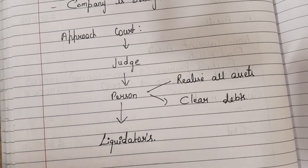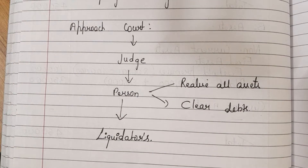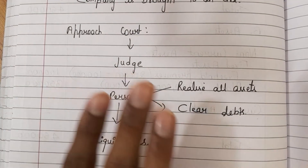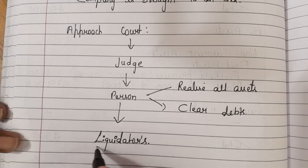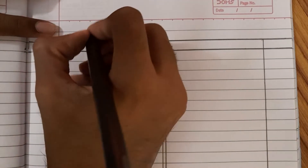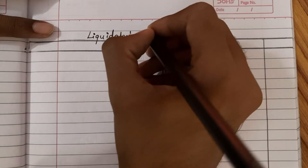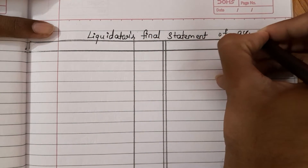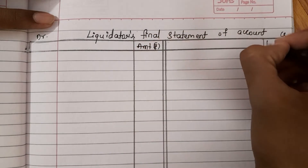When closing the company, the court appoints a person — the liquidator — who collects all the assets and clears all the debts. In this particular chapter, we will be asked to prepare only one account, that is the Liquidator's Final Statement of Account. The liquidator will be preparing this account.